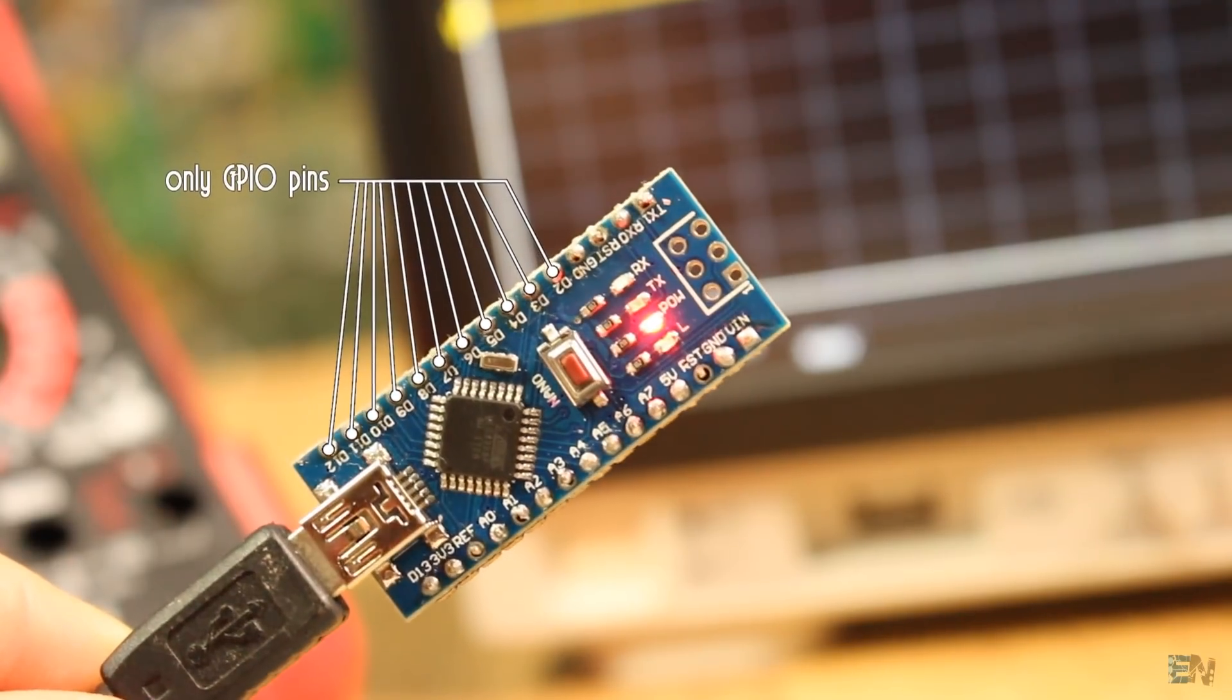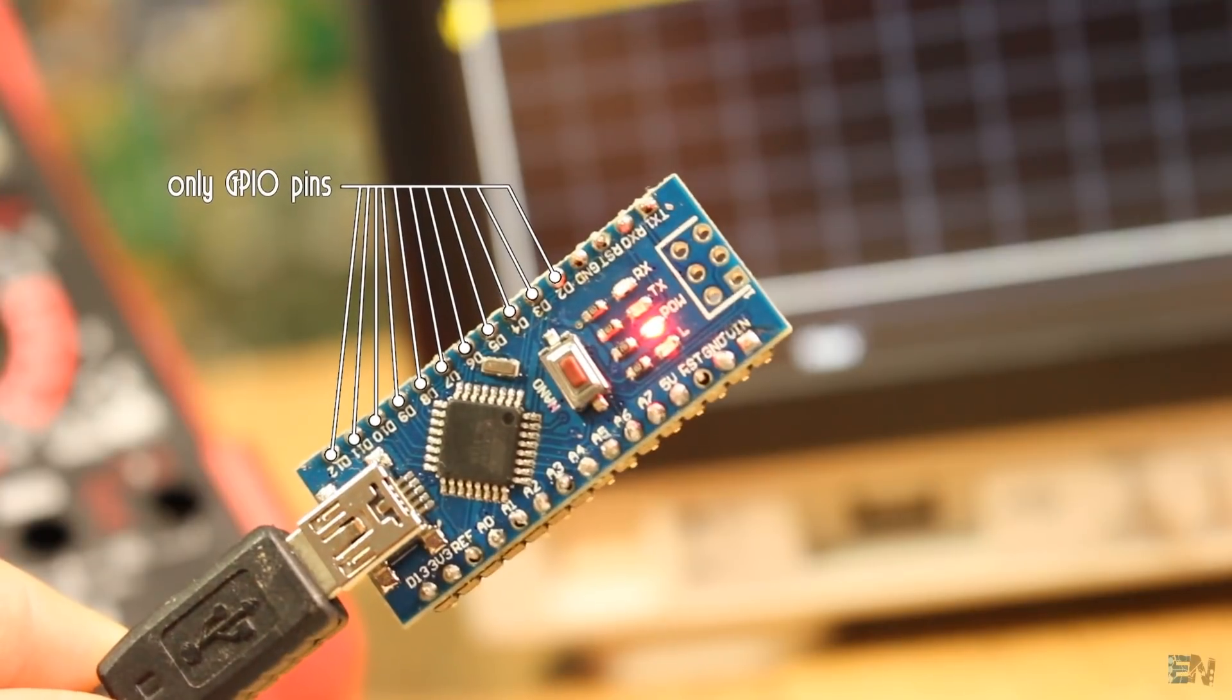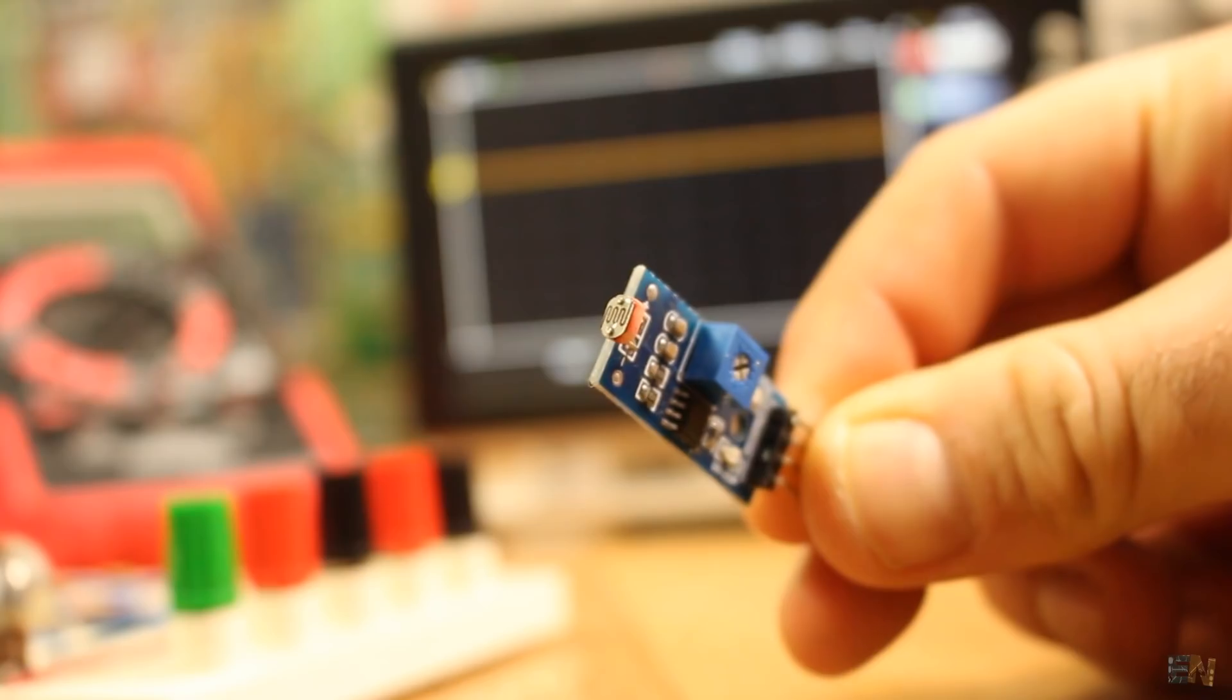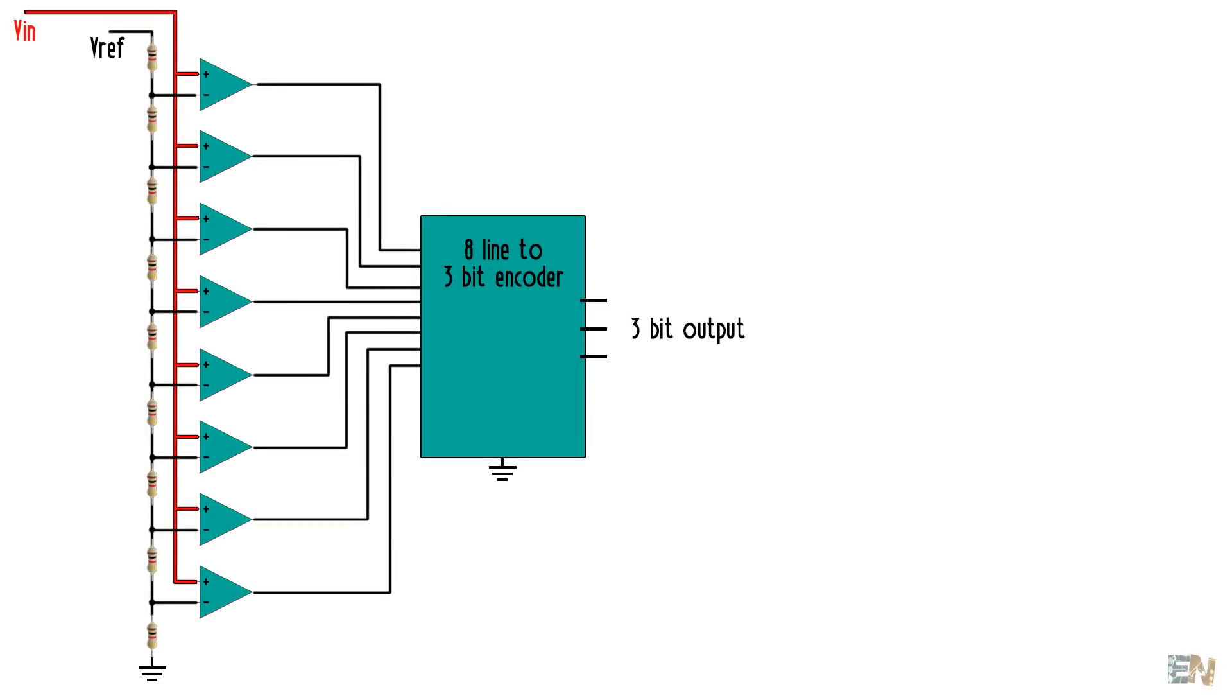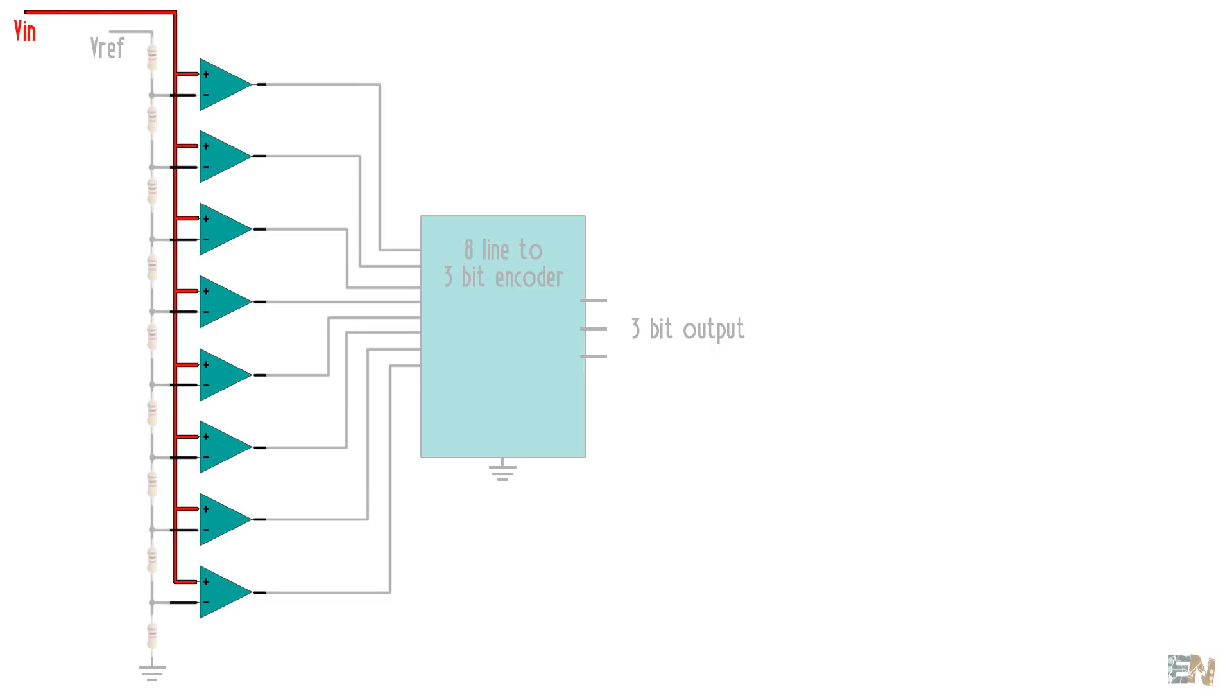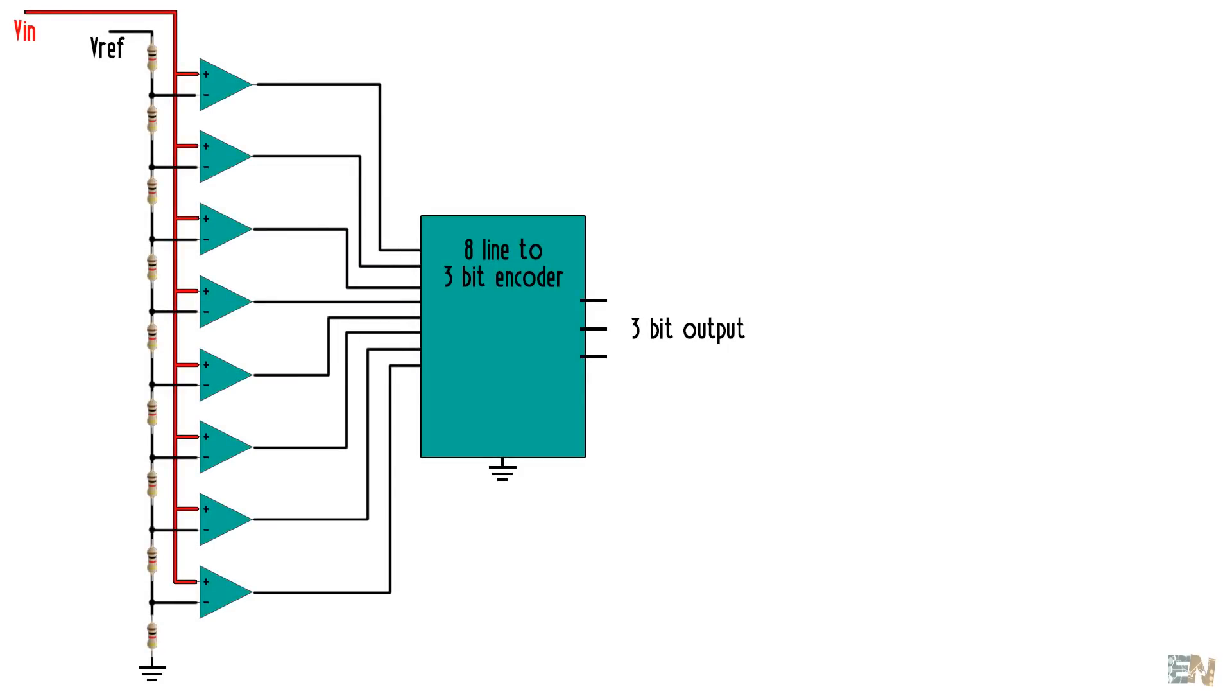Let's now imagine that my Arduino has no ADC, only digital inputs which could detect a low or high value. How can I measure the voltage of this light sensor? Let's take a look at this very basic flash ADC schematic. We basically have an array of operational amplifiers, a bunch of voltage dividers and an encoder. I'll explain how each of this component works.